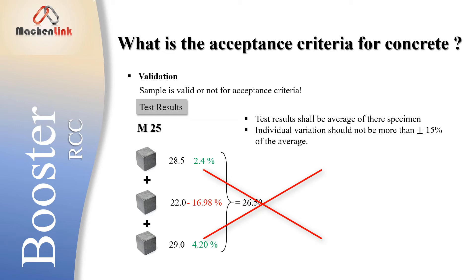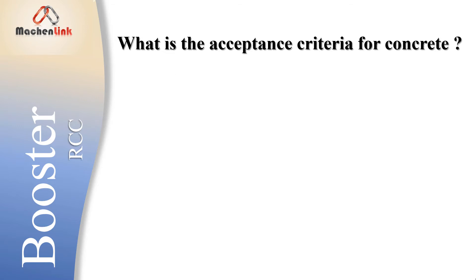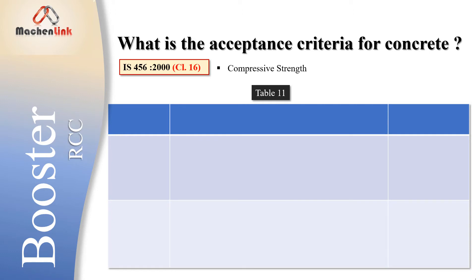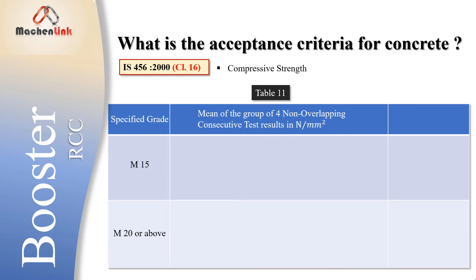If the sample is valid, we will proceed for acceptance criteria. Acceptance criteria for compressive strength is mentioned in Table 11 of IS code. The criteria will be different for M15 and for M20 or above. There are two main criteria: first, the mean of the group of four non-overlapping consecutive test results in N/mm²; and second, the individual test results in N/mm².